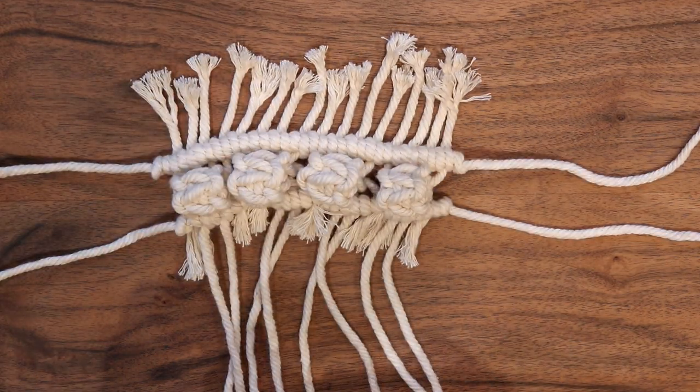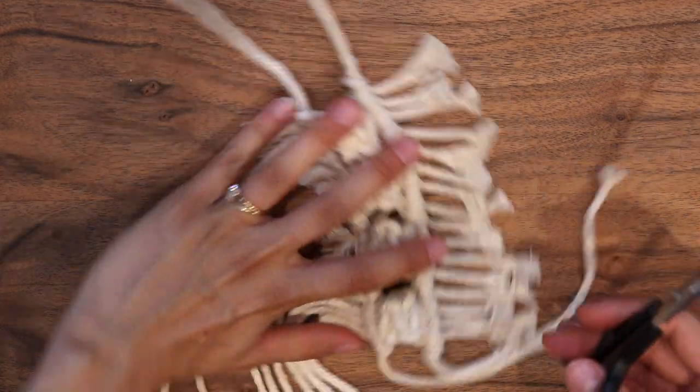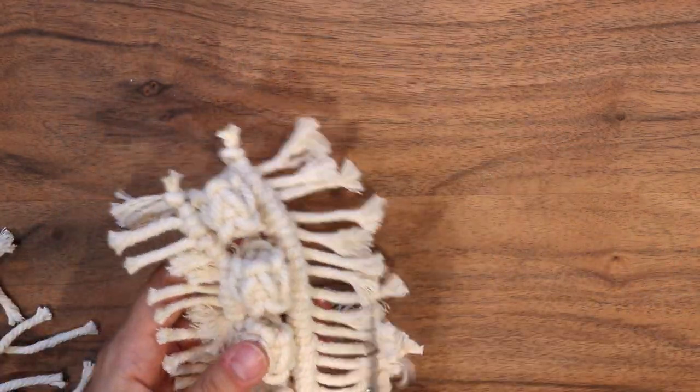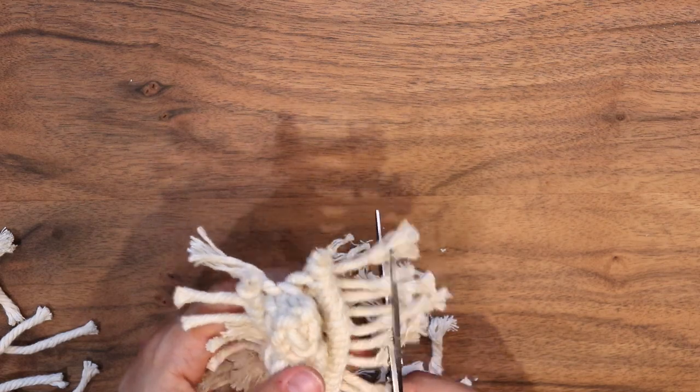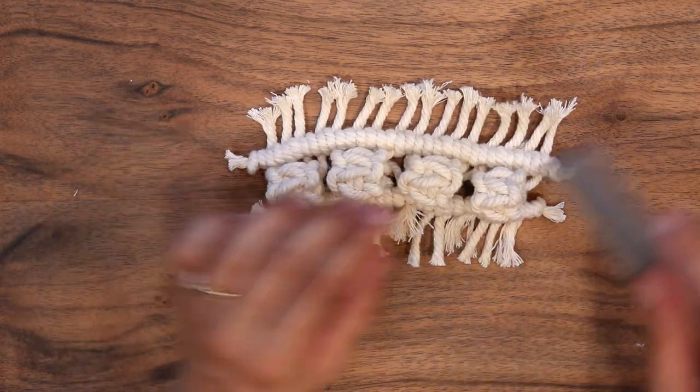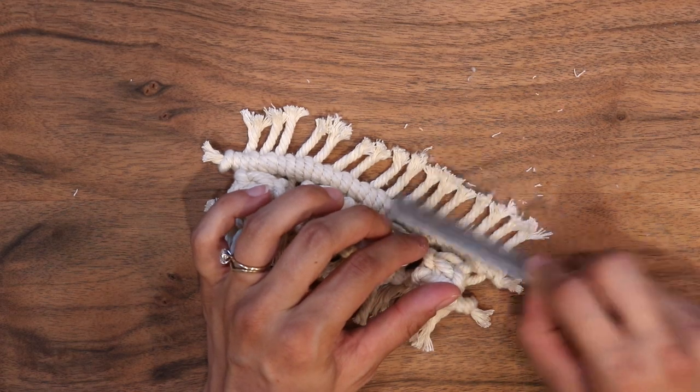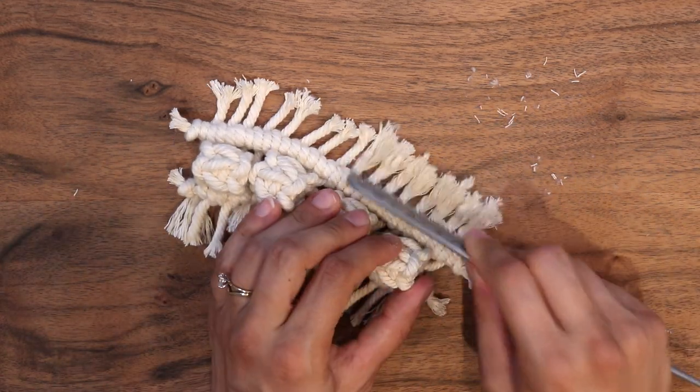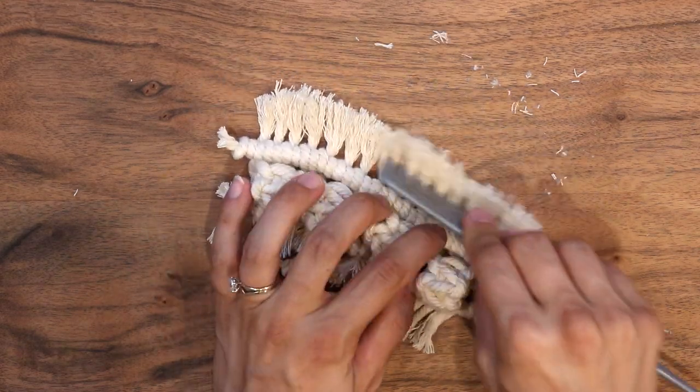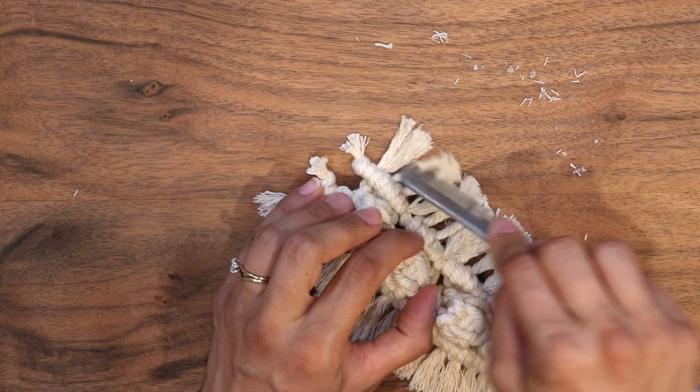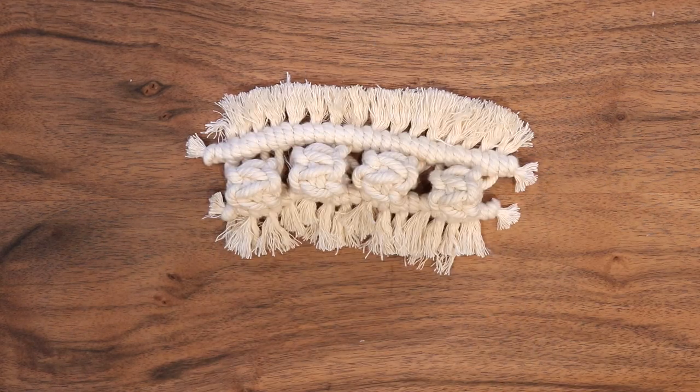Cool, and I'm going to trim these edges. And now the last step of this section is just to take a comb and brush out these strands so that they're more frilly. Okay, awesome. Now we've got to actually attach it to the shoe.